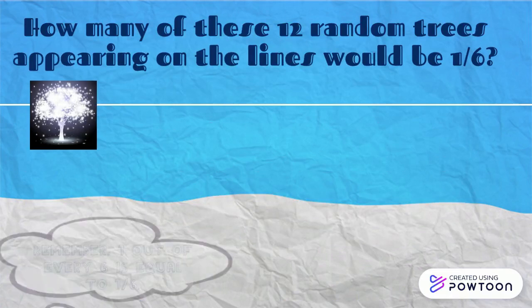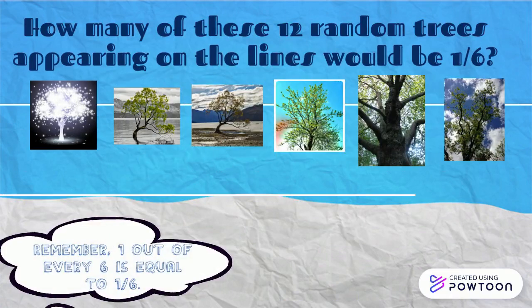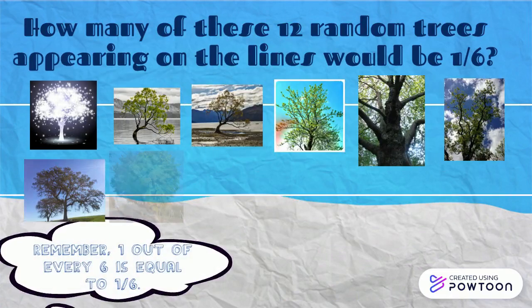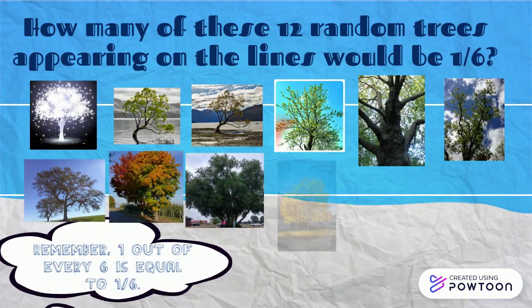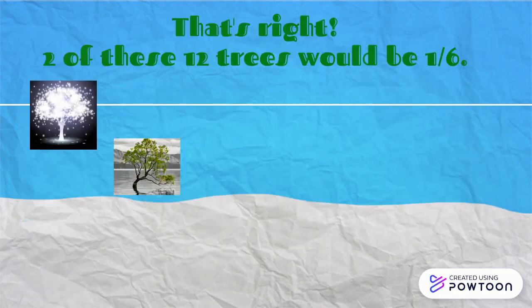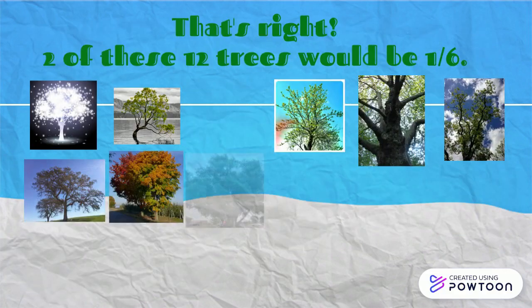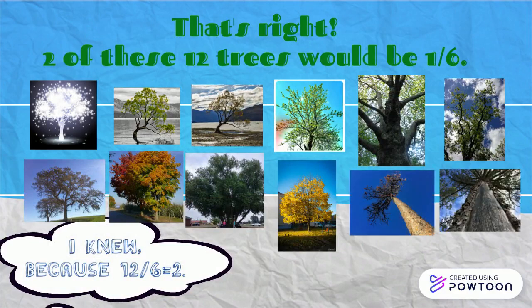How many of these twelve random trees appearing on the line would be one-sixth? Remember, one out of every six is equal to one-sixth. That's right! Two of these twelve trees would be one-sixth, because twelve divided by six equals two.